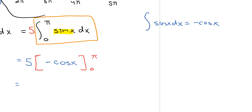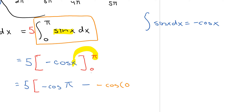Using the fundamental theorem of calculus, I take my upper bound first and plug that in for cos x. So now I have 5 times the bracket of negative cos(π) minus negative cos(0), where cos(0) is my lower bound.